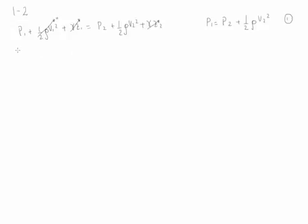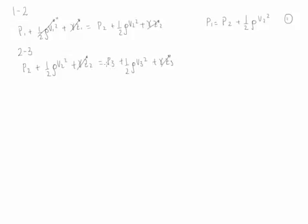Then we have the relationships between point two and point three. Because the fluid is moving at both these points, we can apply both continuity and Bernoulli's. Starting with Bernoulli's: p2 plus one-half rho v2 squared plus gamma z2 equals p3 plus one-half rho v3 squared plus gamma z3. The z values cancel, and the pressure at point three is atmospheric so it equals zero. Therefore, p2 equals one-half rho times (v3 squared minus v2 squared). This is equation number two.